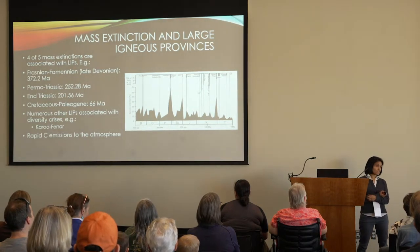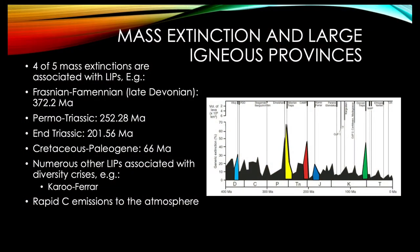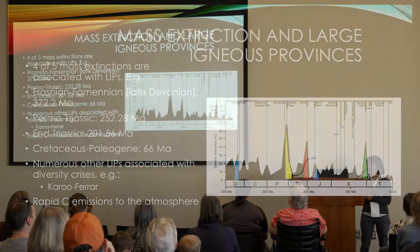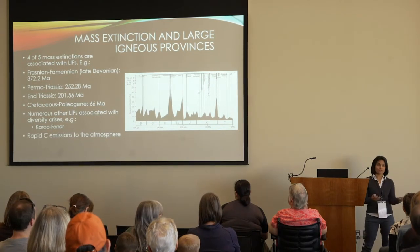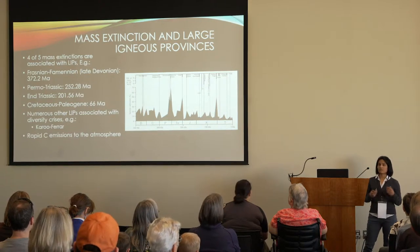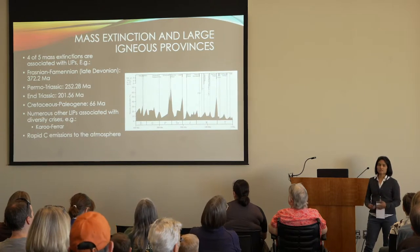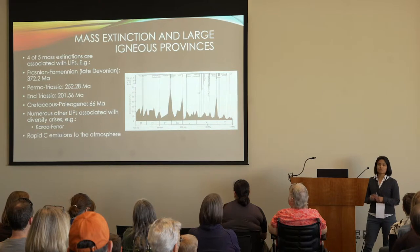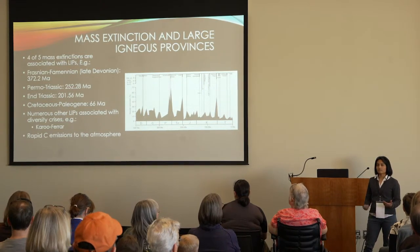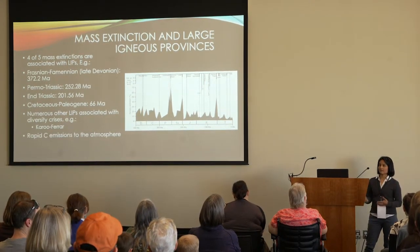I'm going to talk about the end-Triassic mass extinction — Ken talked about the Permo-Triassic mass extinction, so I'll cover the end-Triassic. The end-Triassic is one of five mass extinctions, and four of the past five are associated with large igneous provinces. These large igneous provinces represent massive volcanism events that spewed hundreds of thousands to millions of cubic kilometers of lava onto Earth's surface, emitting a huge amount of greenhouse gases in the form of CO2 and methane.